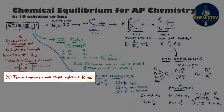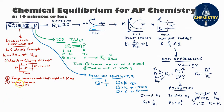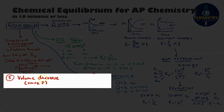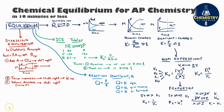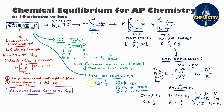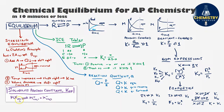Another way to shift this equilibrium is to decrease the volume of the container. Since these are gases, that raises the pressure, and to decrease pressure again, the reaction shifts toward whichever side has fewer moles of gas — in this case shifting to the right. This is also a good time to discuss the solubility product constant, Ksp. Ksp is simply a special title given to the equilibrium constant for a salt that has dissolved in aqueous solution and fully saturated it. When saturation occurs, the solid salt is in equilibrium with its dissolved aqueous ions.